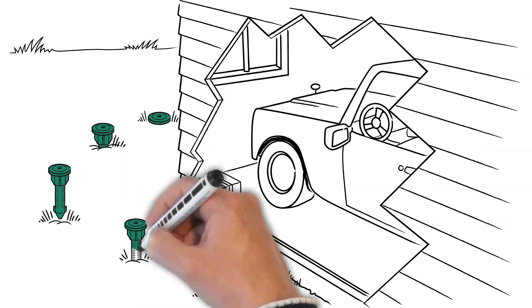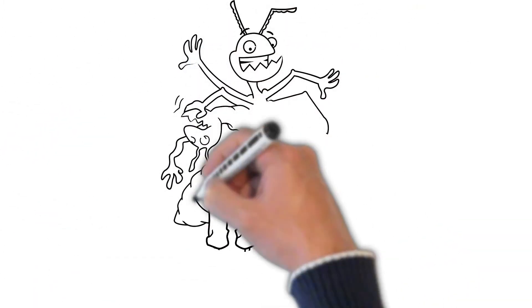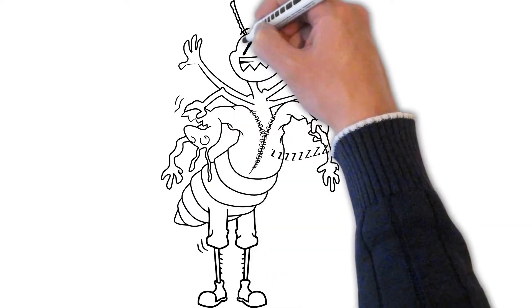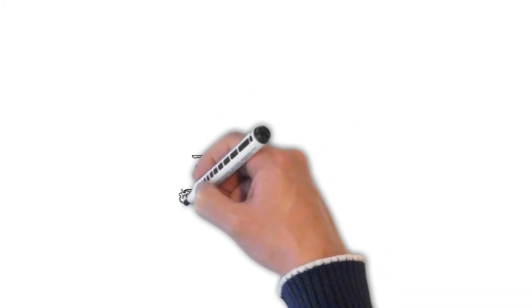The bait inside has an active ingredient that keeps termites from molting. Termites need to molt to survive. When they can't, it's lights out for good.